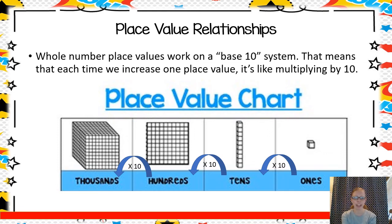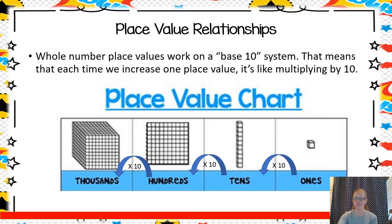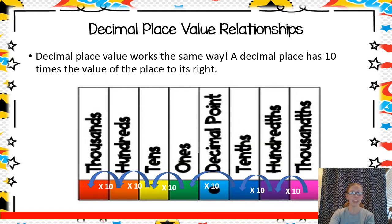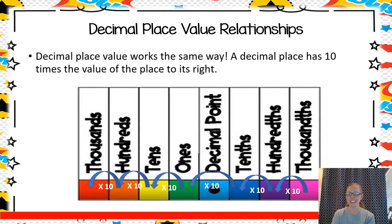Let's talk about place value relationships with decimals. Just like whole number place value works on a base 10 system, our decimals do too. Every time we increase in value, it's like multiplying by 10. In our decimals, it works the very same way — every time you increase in place value, it's like multiplying 10 times the value of the place on the right.